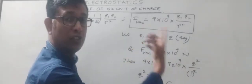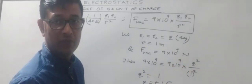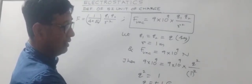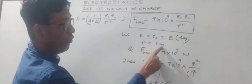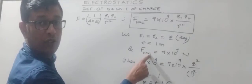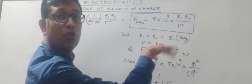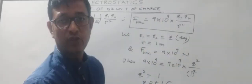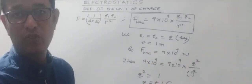If we consider equal and opposite charges, the nature of the force would obviously be attractive. So the alternate definition: 1 Coulomb may be defined as that charge which, when placed at a distance of 1 meter in air or vacuum from another equal and opposite charge, exerts upon each other an attractive force of 9 into 10 to the power 9 Newton. This is the definition of 1 Coulomb — it is the SI unit of charge.